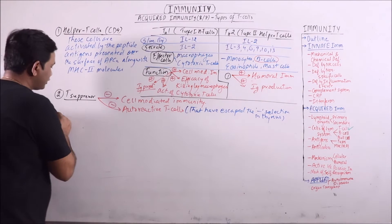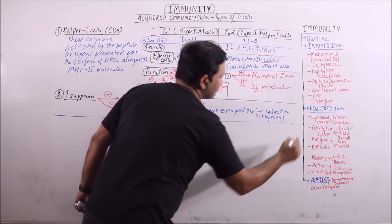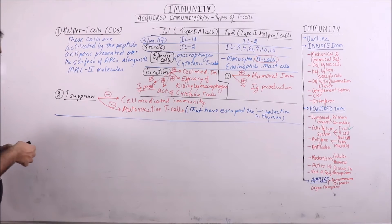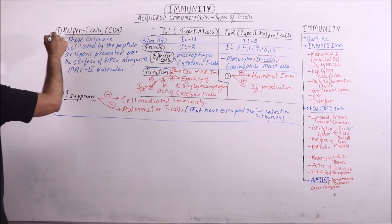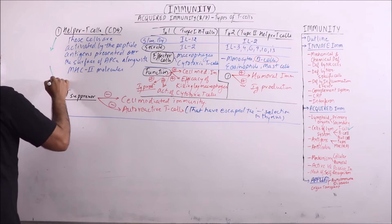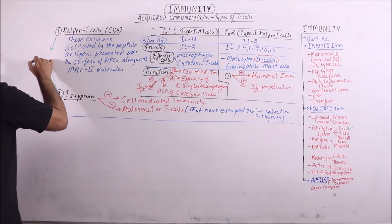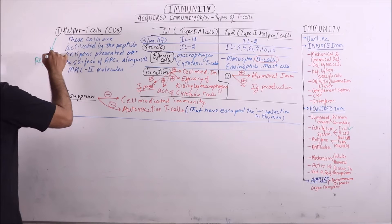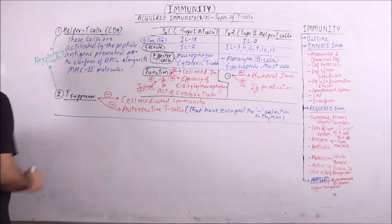These two types of cells, that is helper T-cells and suppressor T-cells, are collectively termed as regulatory T-cells.